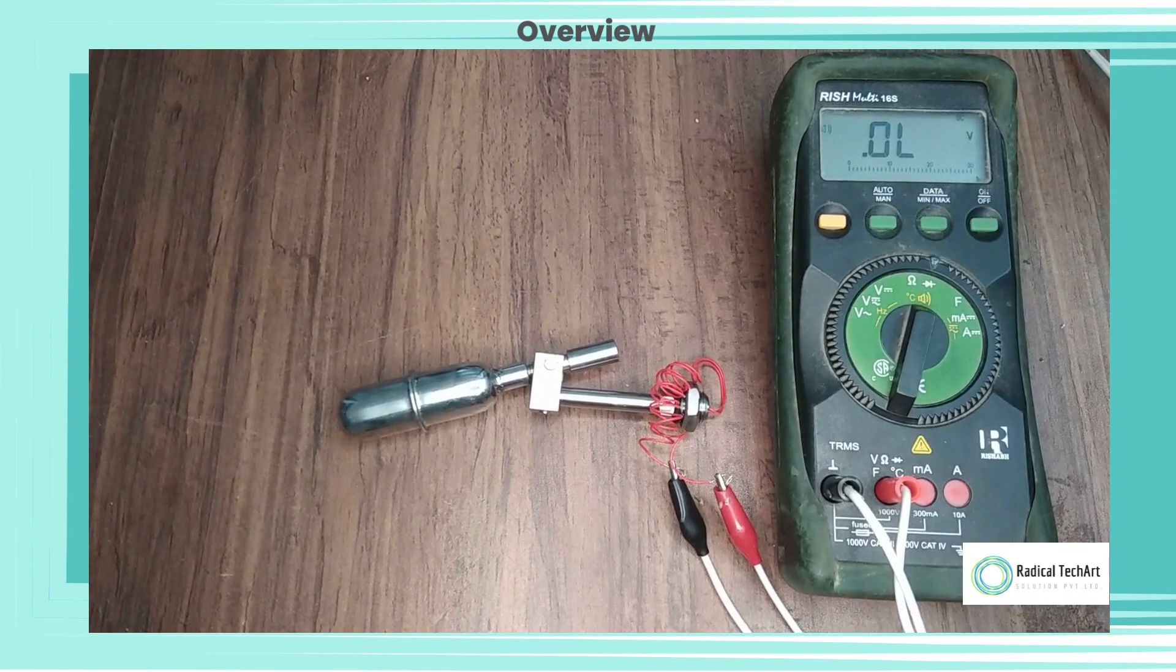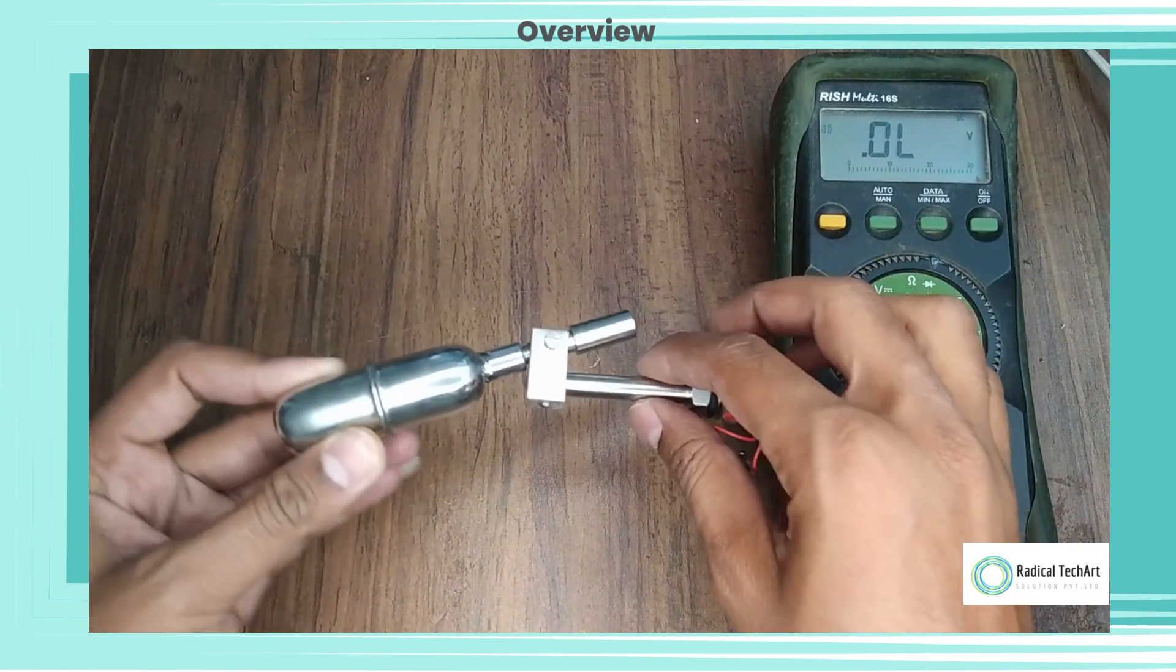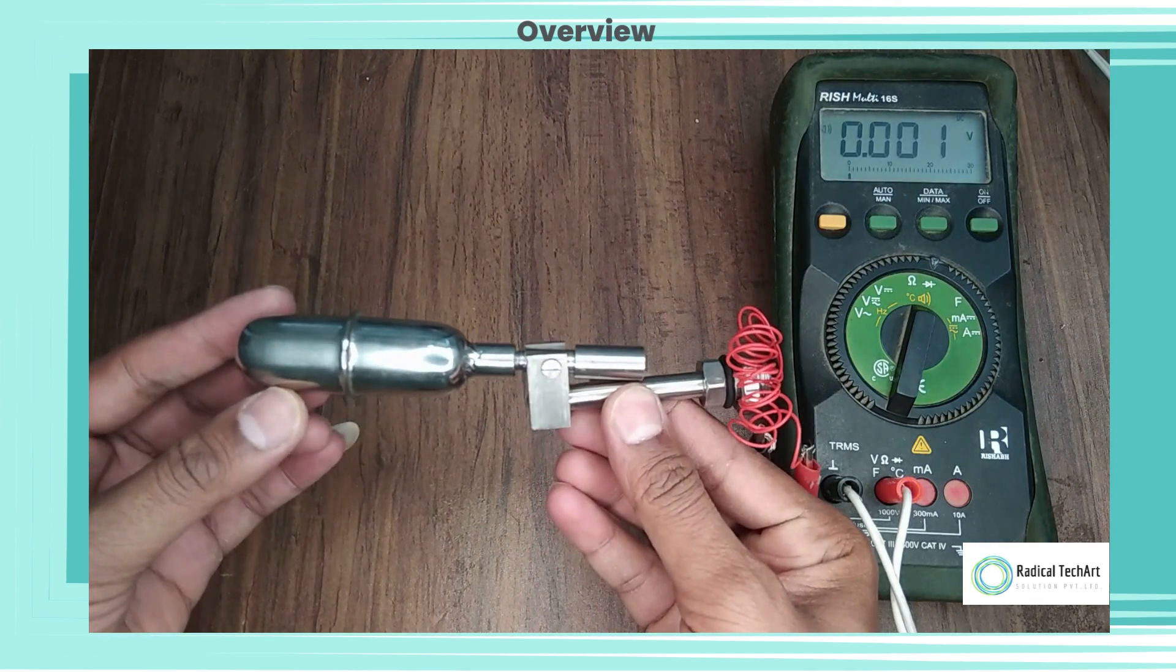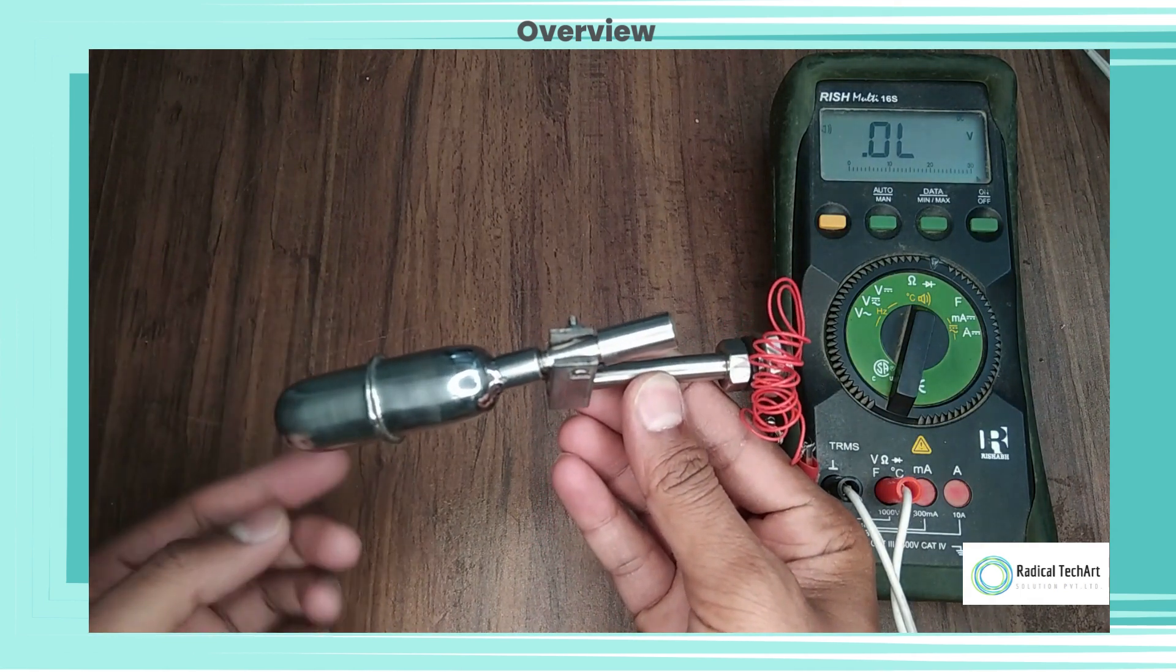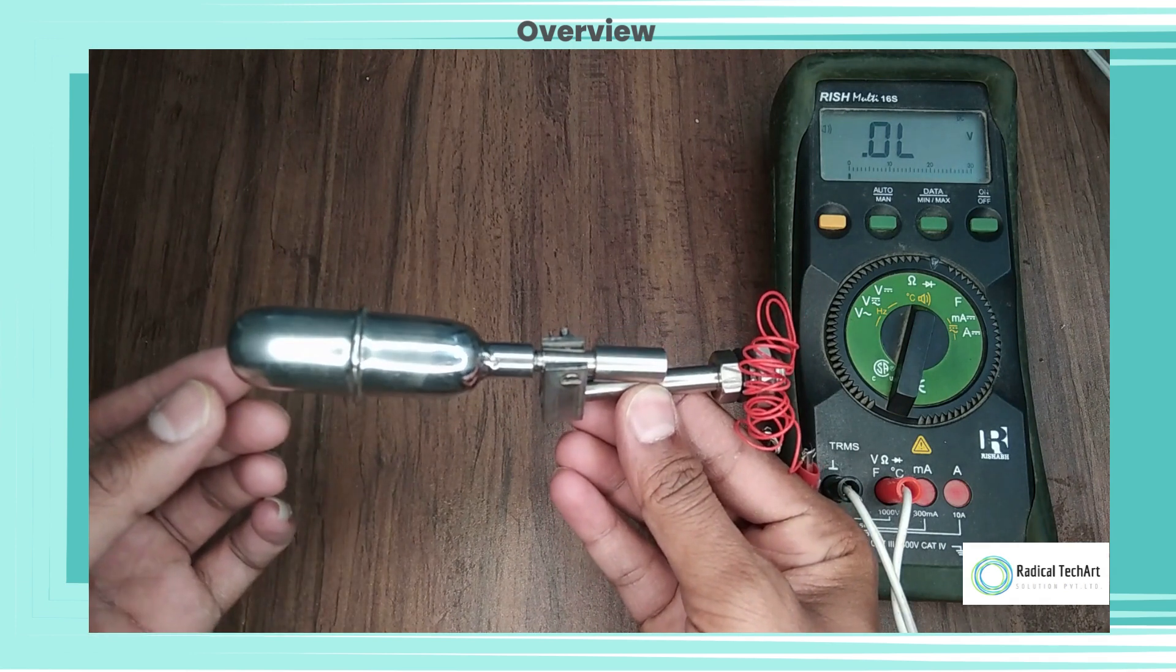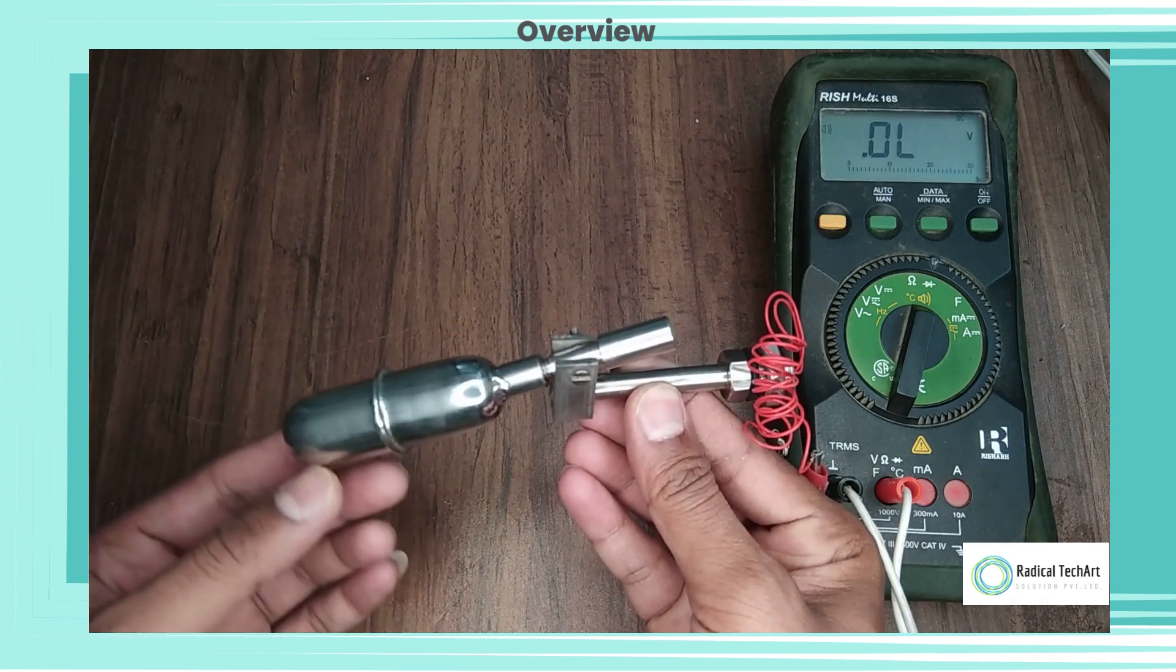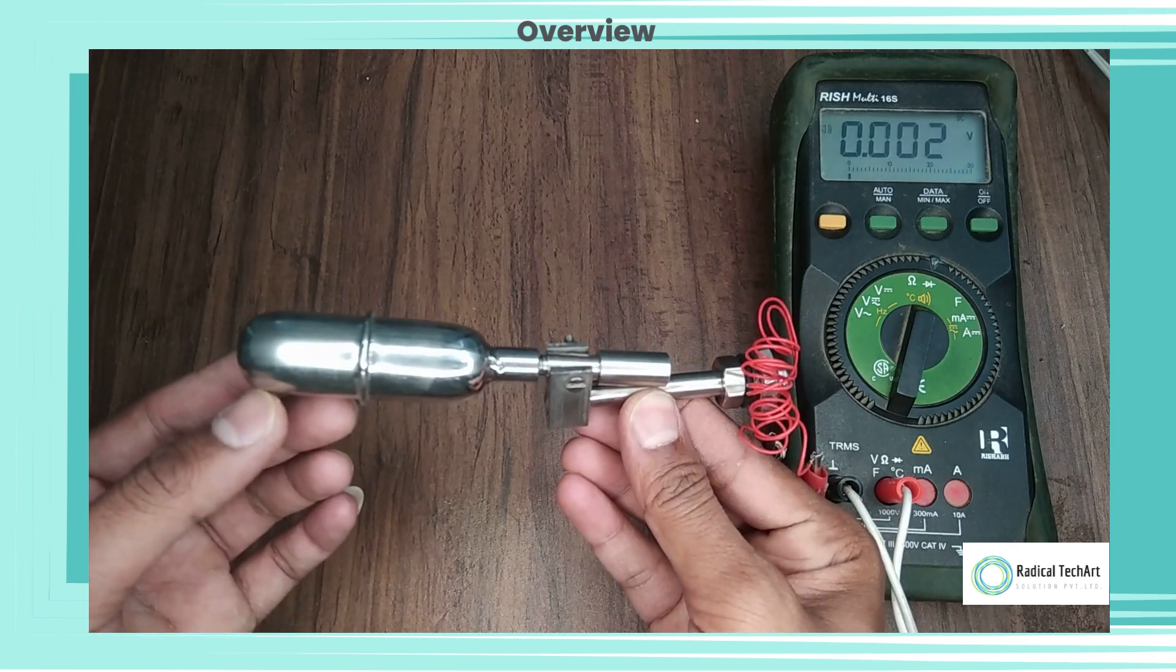When the liquid level is below the set point of the switch, the float is in a lowered position, and the switch is in its normal or resting position. As the liquid level rises, the float rises with it, and when it reaches the set point of the switch, the switch is activated, causing the lever arm or rod to move and trigger the desired action.